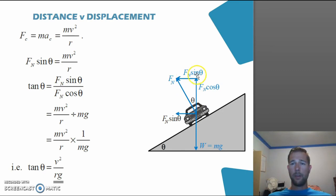So we've got the opposite side, which is Fn sin theta, and the adjacent side, Fn cos theta, with this equation.